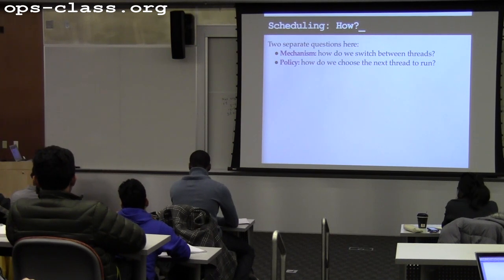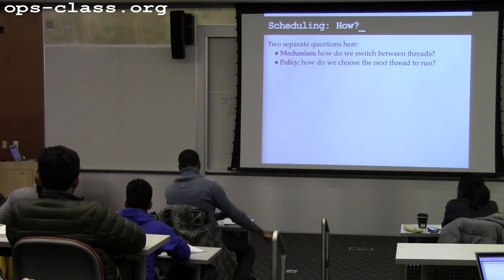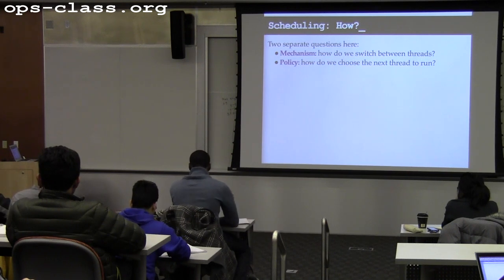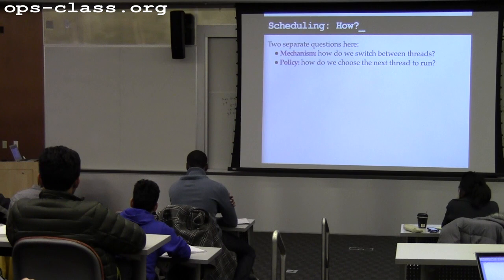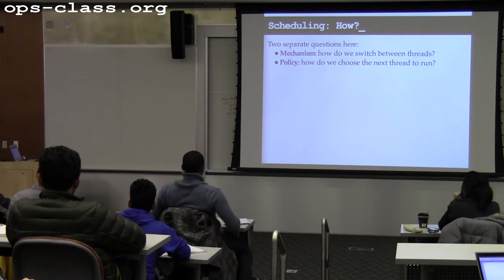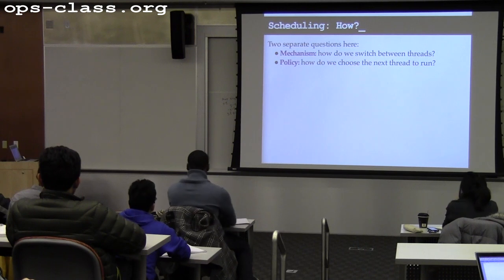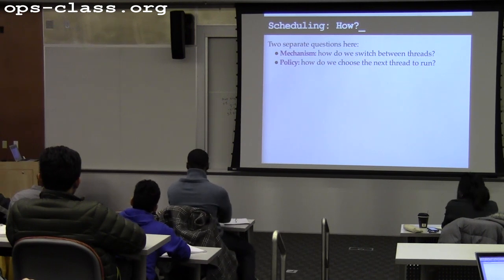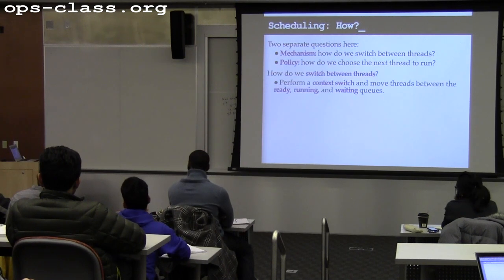Now we've gotten high enough in the kernel stack of abstractions that we can start to talk about policies. We have the mechanism: we can start and stop threads safely, save their state, and use synchronization primitives to coordinate threads. Now the interesting question is: what should be the thread that's running? How do I choose the next thread and allocate the CPU or multiple cores?